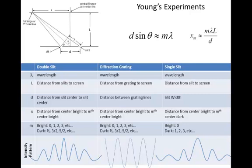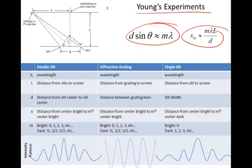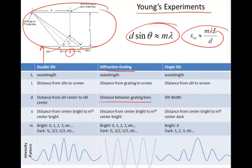These are the things we need to know about Young's experiments — these are the two equations. This is the general setup for a double-slit. Remember, distance D for a diffraction grating is just the distance between grating lines.